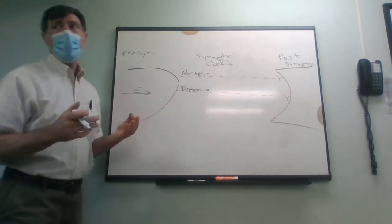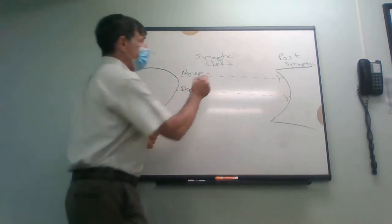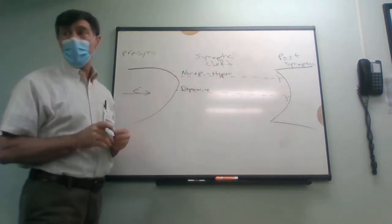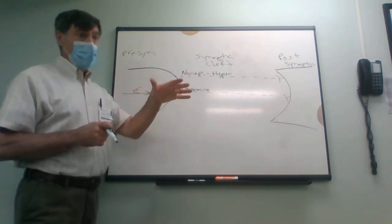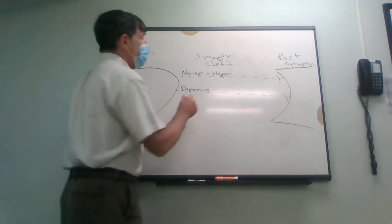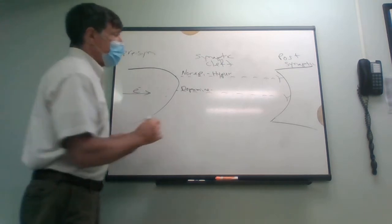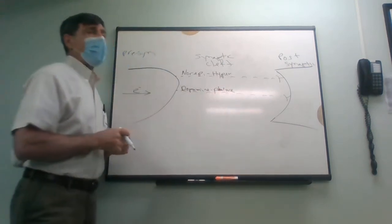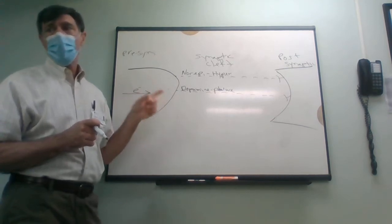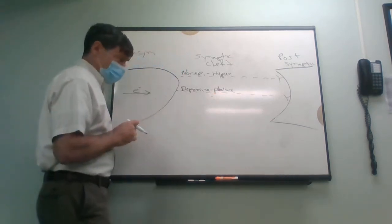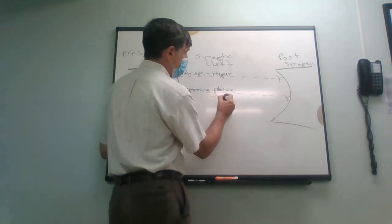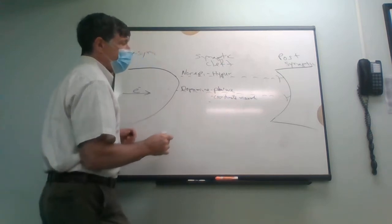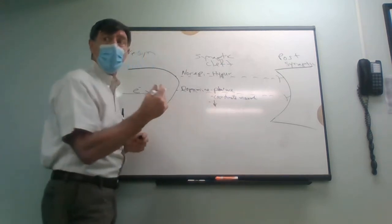Norepinephrine makes you hyper and excited. We can think about caffeine — when you drink caffeine you're indirectly elevating these neurotransmitters, and even a little caffeine can make you shake or feel hyper. Dopamine is the central pleasure neurotransmitter, meaning all drugs elevate dopamine to a certain amount. Dopamine also helps coordinate muscle movement.